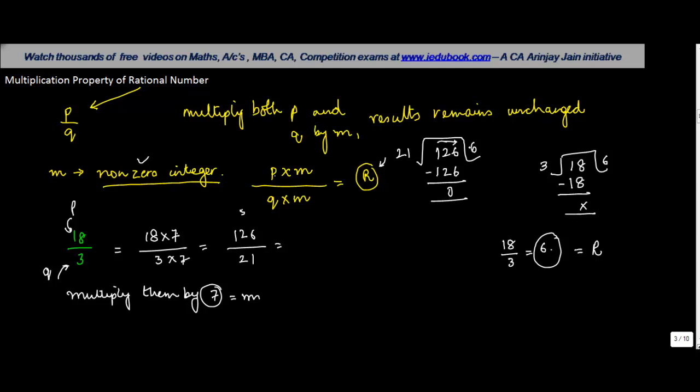Hence we conclude that for any rational number p upon q, when we multiply both p and q by any nonzero integer m, the results remain unchanged.